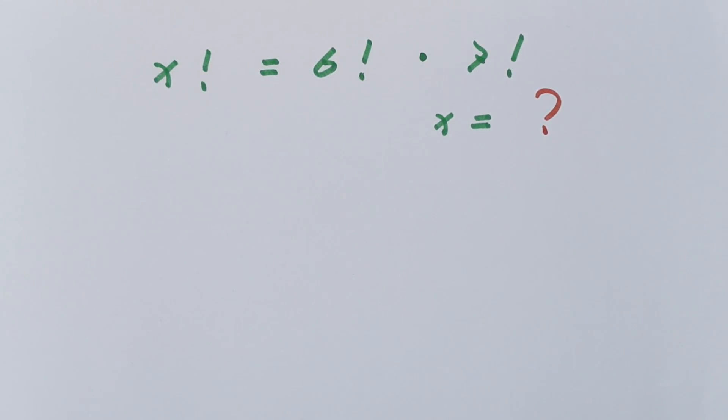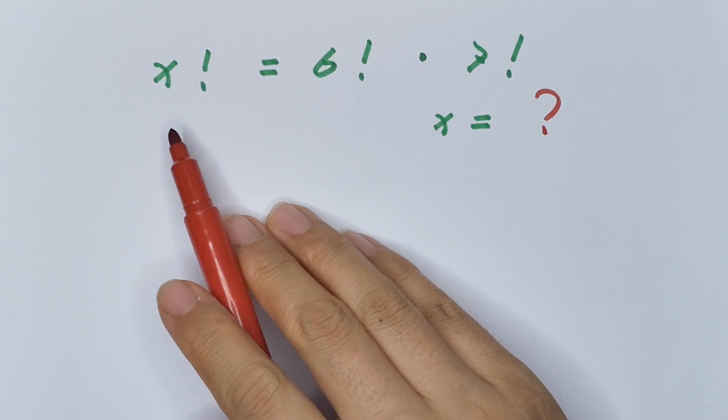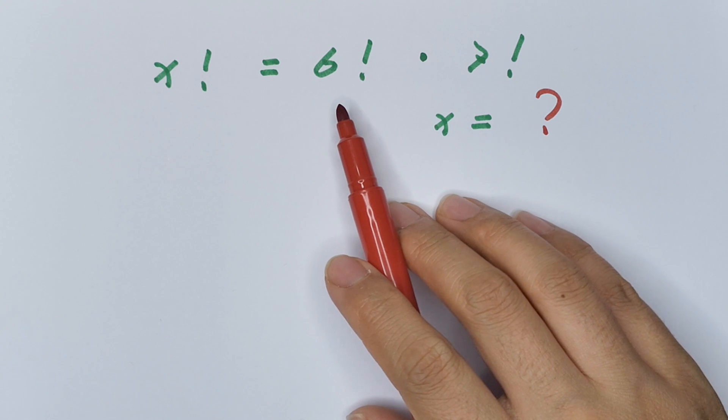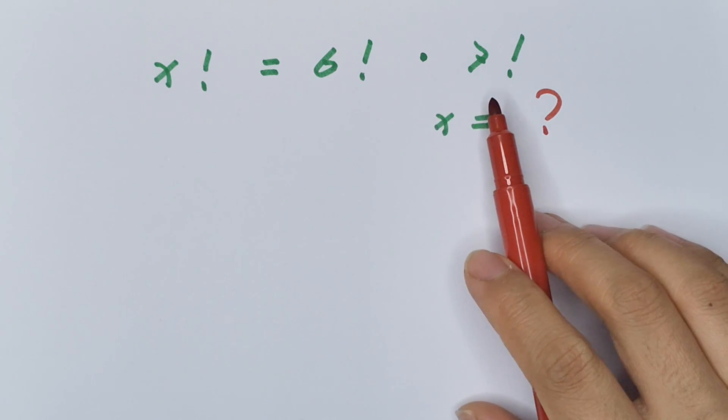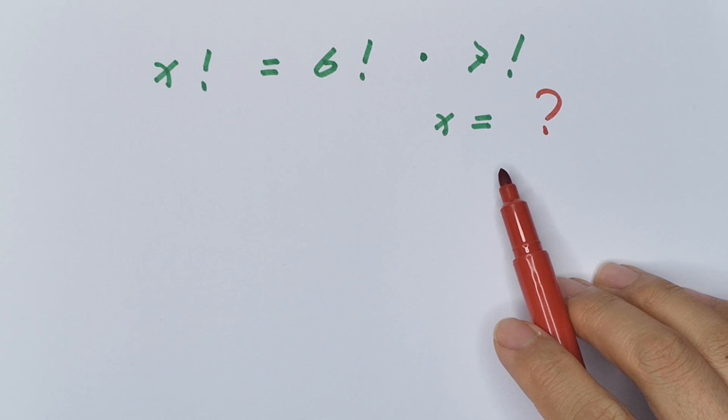Hello everyone, welcome to Math4U. How to solve x factorial equals 6 factorial times 7 factorial, and find the value of x.